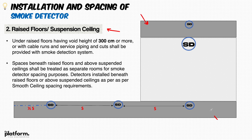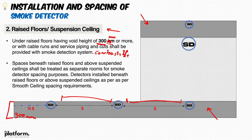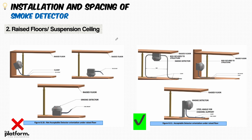Now let's move to raised floors and suspended ceilings. Sometimes we have void areas above the ceiling or under the raised floor. Smoke detectors may be required in these areas if they are serviced by cable runs, piping, or combustible materials in trenches. Whenever the void height exceeds 300 mm and combustible materials such as cables or piping are present, we need to provide a smoke detector. The same nominal spacing of nine meters applies, along with the other wall-distance rules.